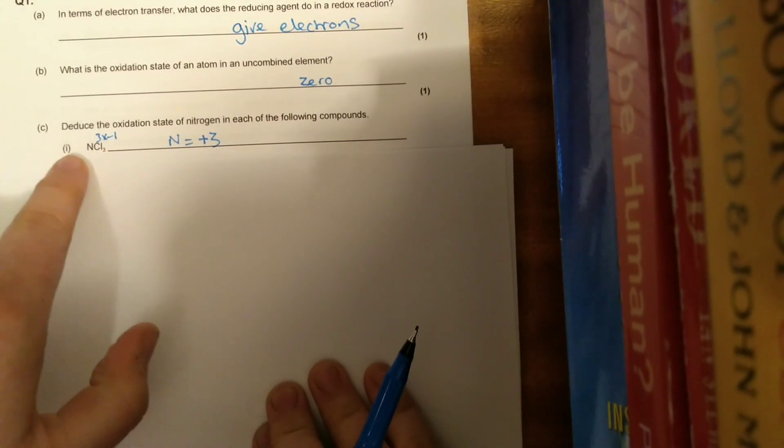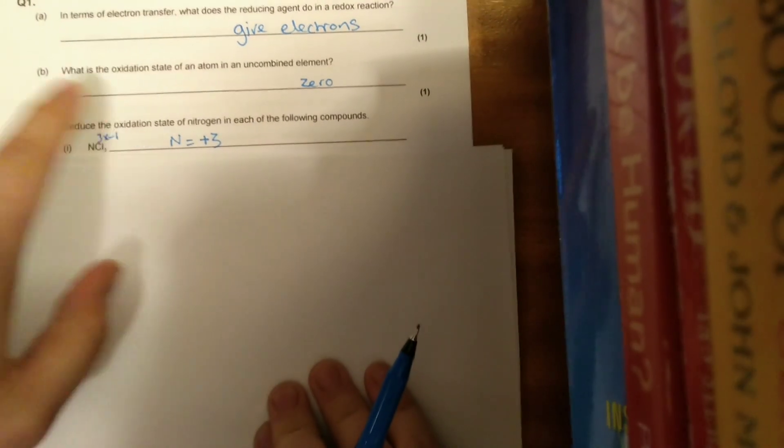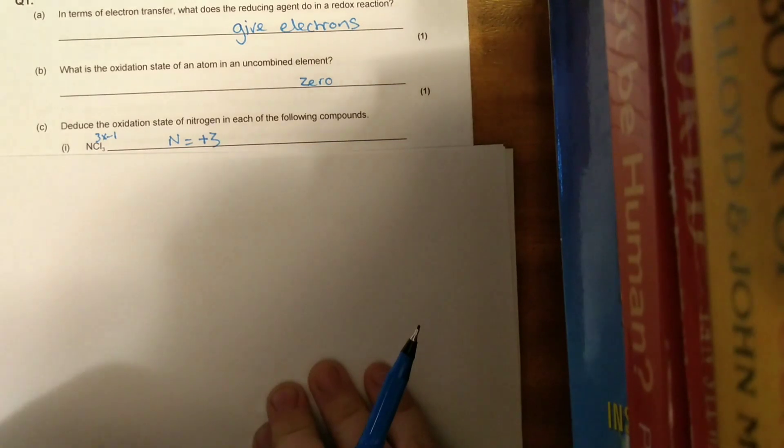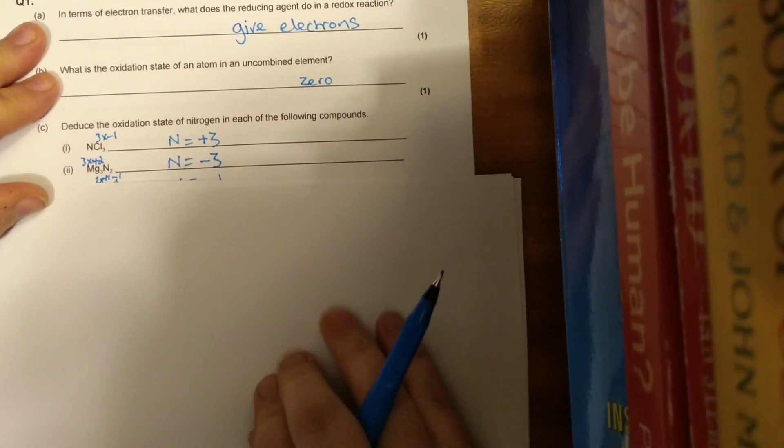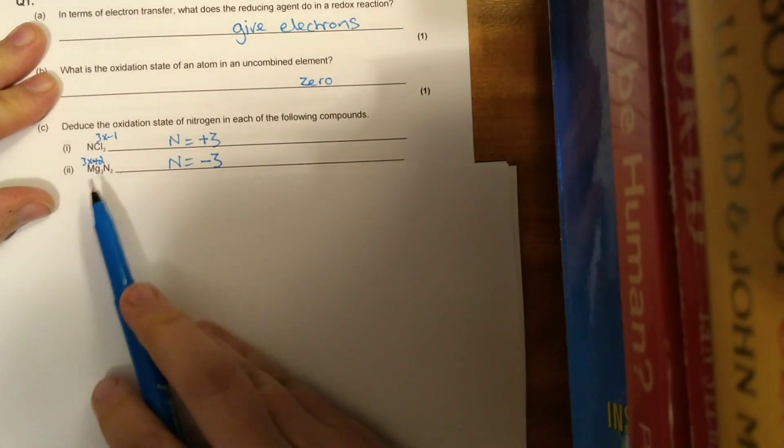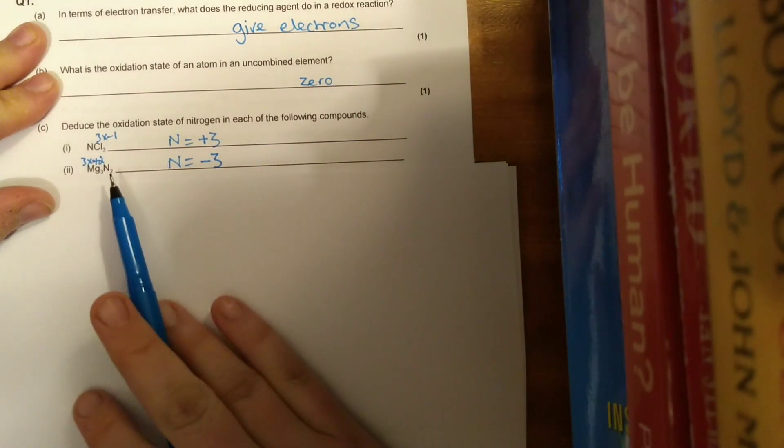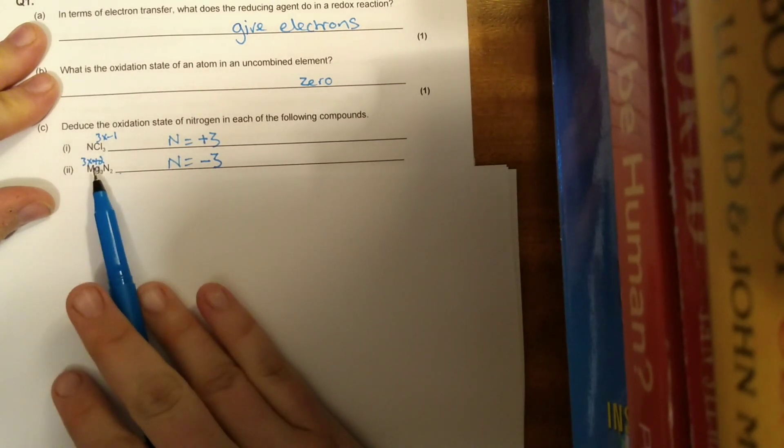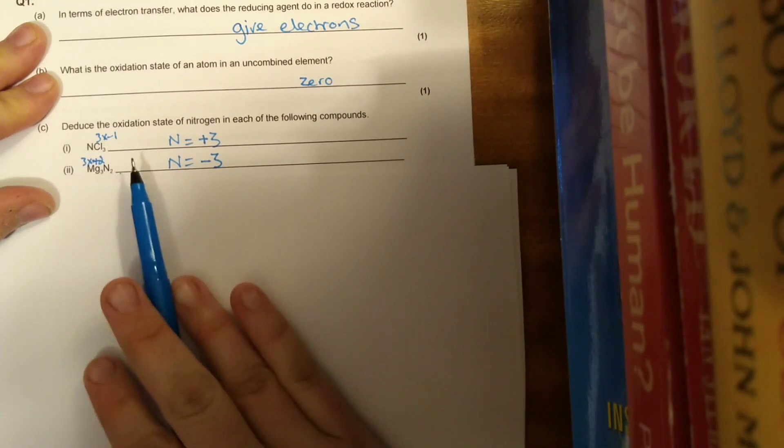We then have to calculate the oxidation state of nitrogen in different compounds. The nitrogen is going to be changing, so we're looking at the other things to be more stable. In the nitrogen chloride, we've got chlorine here, that's group 7 with a minus 1 charge. Three times minus 1 gives a charge of minus 3. So the nitrogen must have an oxidation state of plus 3, so that the compound is overall stable with an oxidation state of zero.